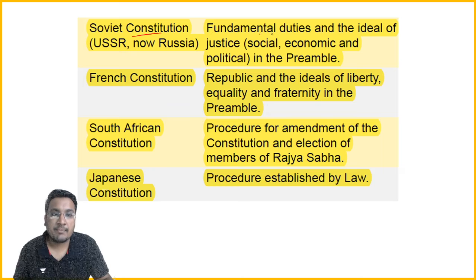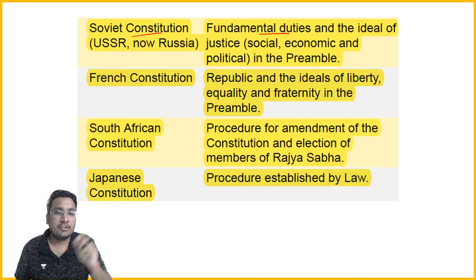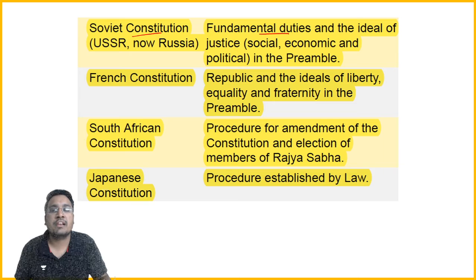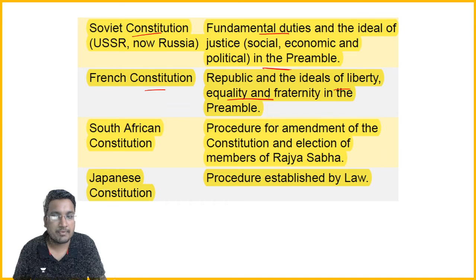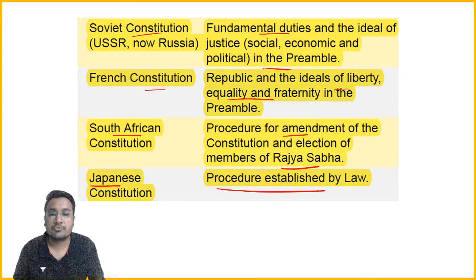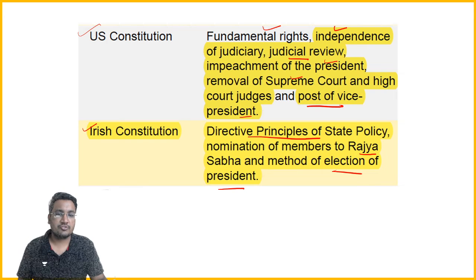From the Soviet Constitution, we borrowed the concept of Fundamental Duties and the ideal of justice — social, economic and political — as it appears in the Preamble: 'We the people of India having solemnly resolved to constitute India into a sovereign, socialist, secular, democratic republic and to secure all its citizens justice, social, economic and political.' From the French Constitution, we borrowed liberty, equality and fraternity. From the South African Constitution, the amendment procedure and election of Rajya Sabha members. From the Japanese Constitution, the concept of 'procedure established by law.'